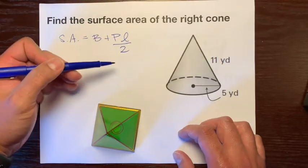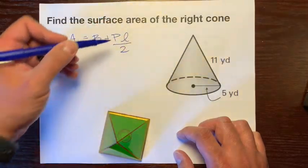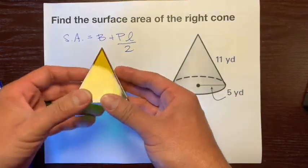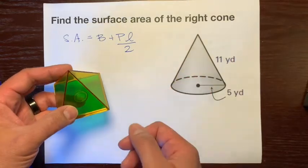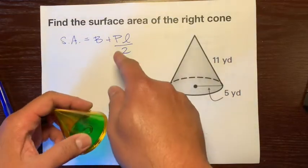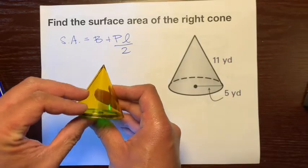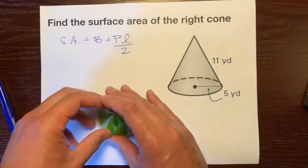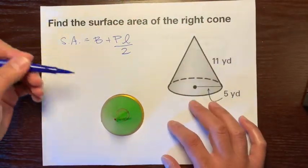In this example, the slant height is this 11 right here, and it's divided by two because all of the lateral faces in a pyramid are triangles, so they're half of a rectangle. But we're going to modify or adapt this formula to work for a cone. The base of a cone is a circle.